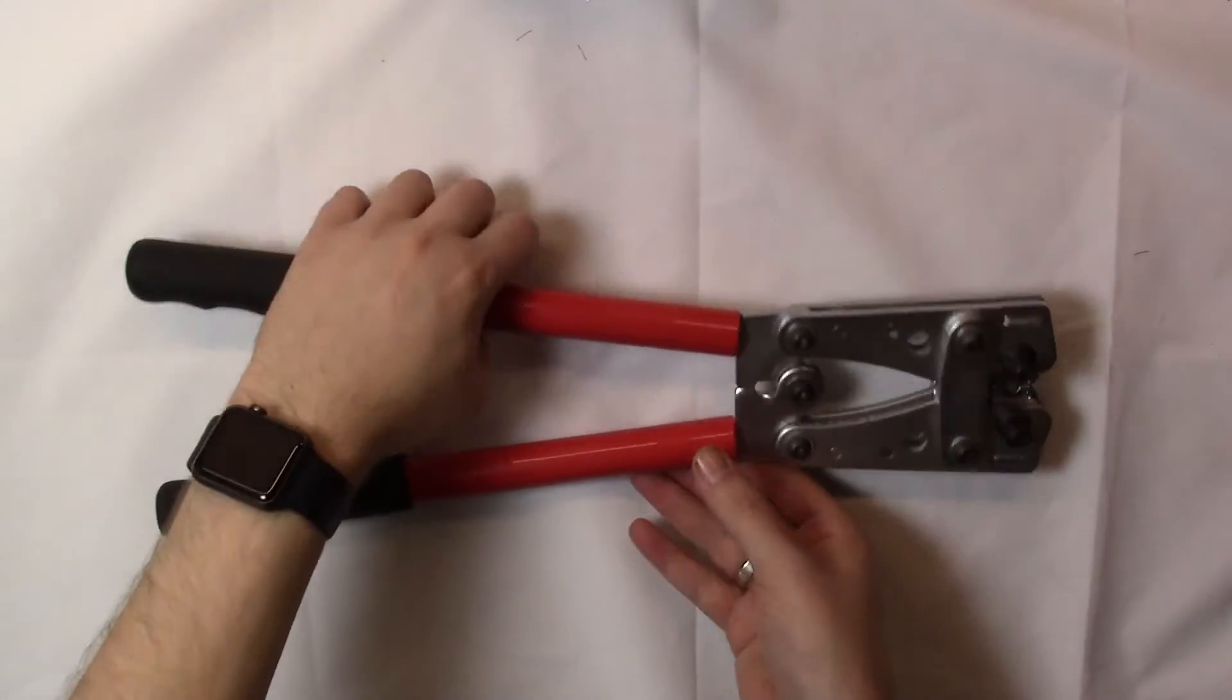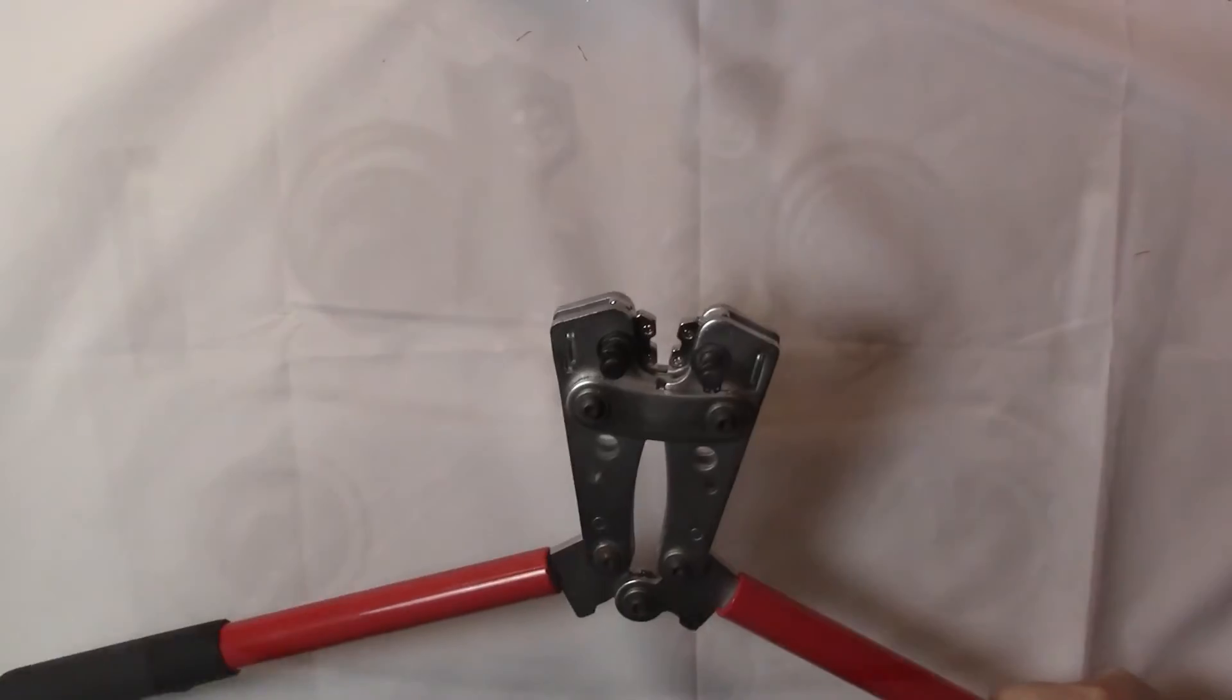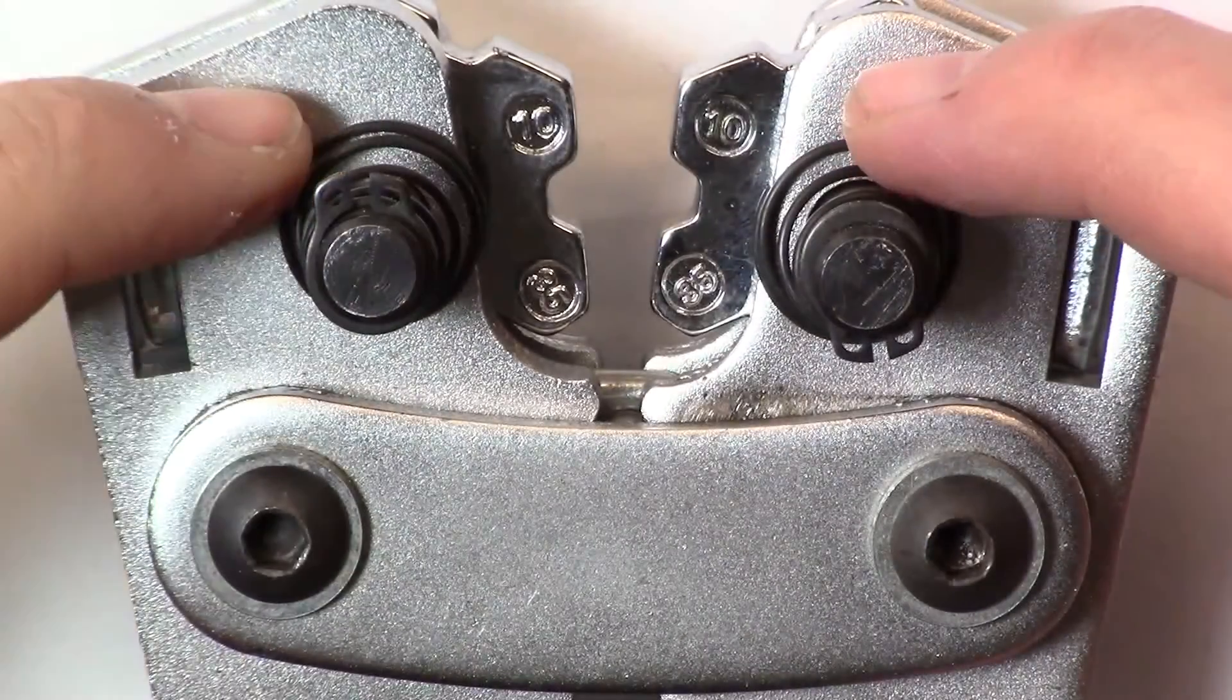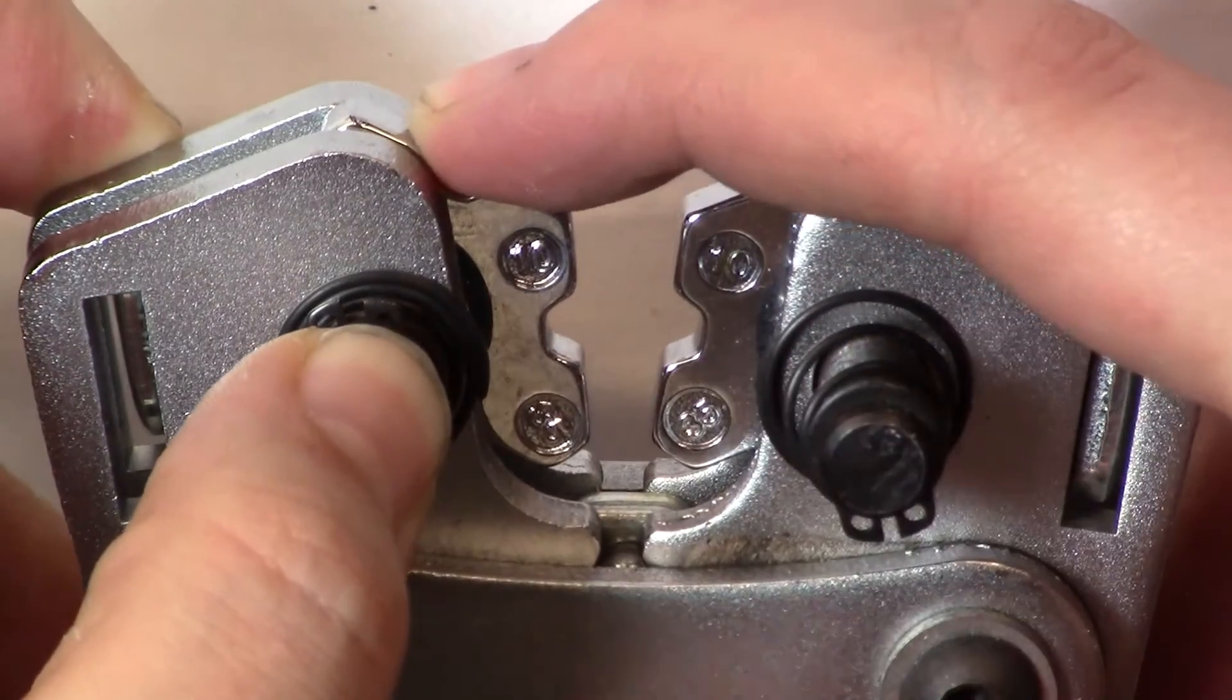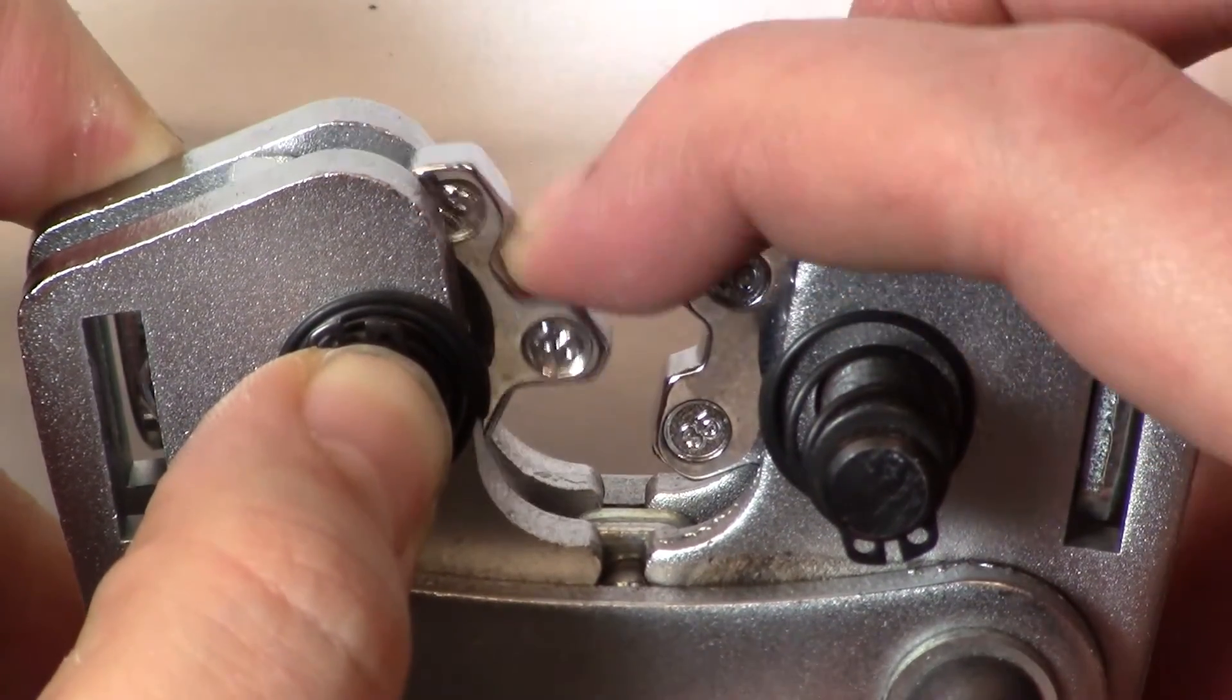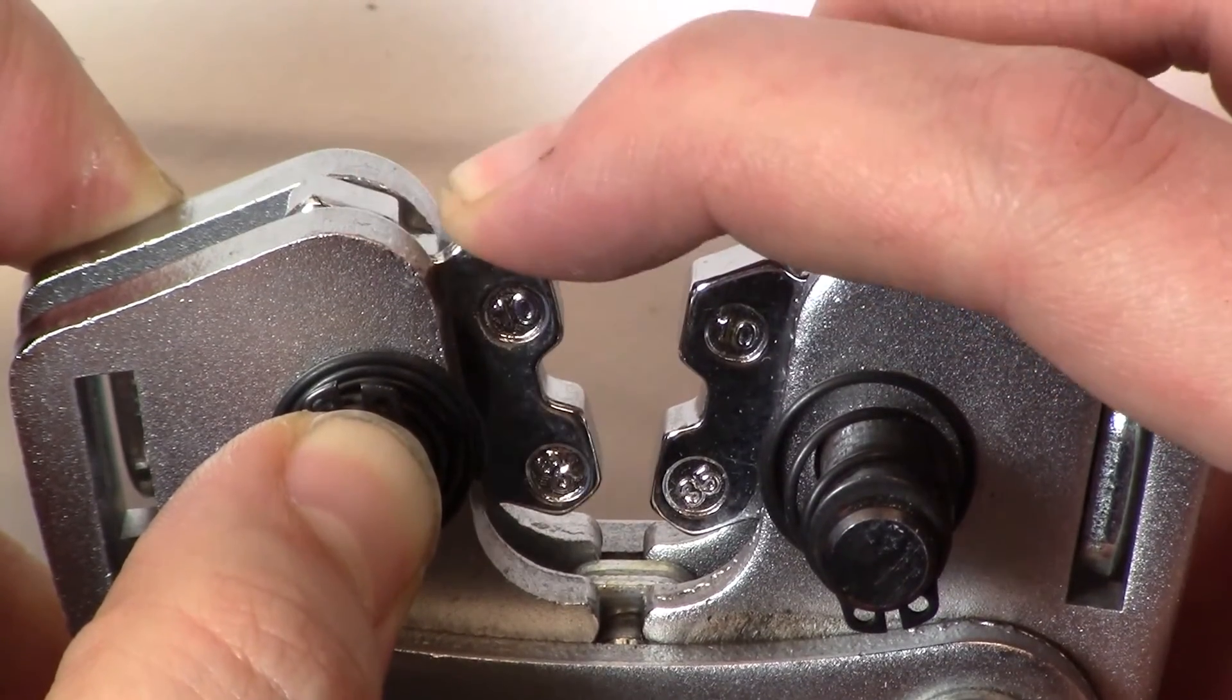This just means that we will get a secure crimp. To change the size on this tool you simply just have to push in one of the spring locks. And then rotate the head until you find the correct size and it is on the top.